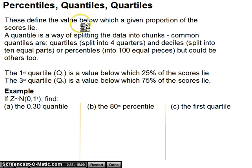Percentiles, quantiles, and quartiles. Quantiles are the overarching term, a way of splitting the data into chunks. Common quantiles are quartiles, which splits the data into 4 equal parts, deciles, which splits the data into 10 equal parts, percentiles into 100 equal parts, but you could have others as well. The first quartile is known as Q1, a value below which 25% of the data lies. Q3 is the value below which 75% of the data lies.